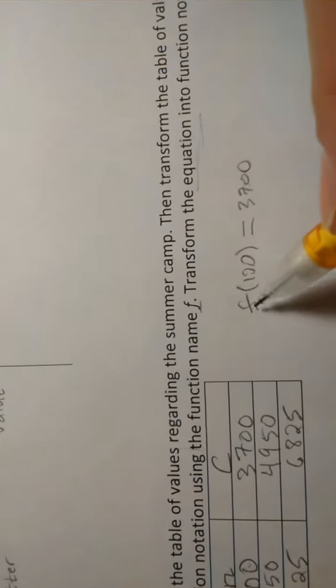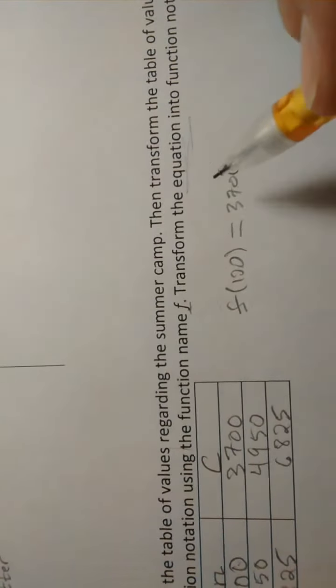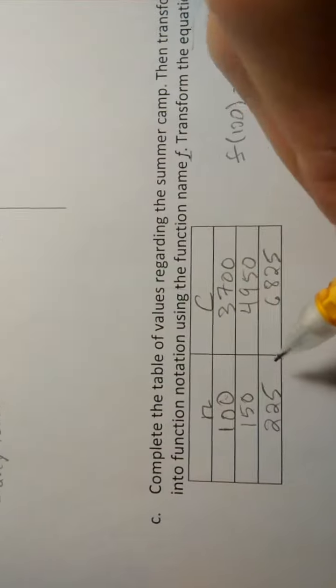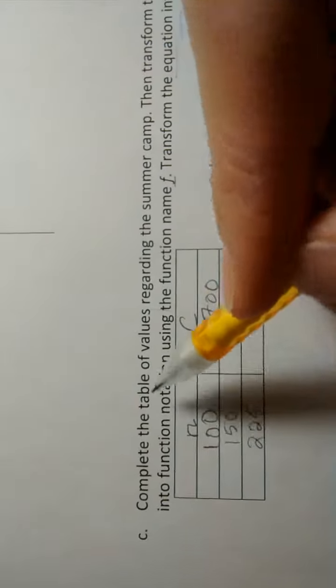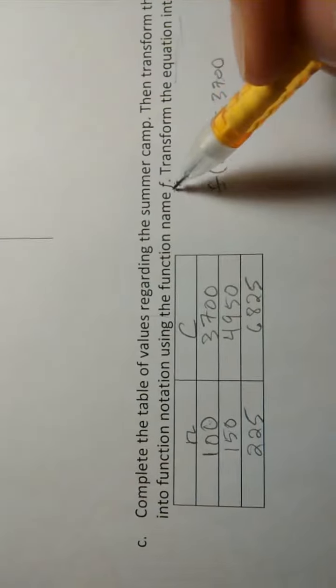It's simply saying that the function F associates 100 with 3,700. That's all it's doing. Or F is assigning 100 to 3,700. So we could talk about this table as being the function F. It assigns 100 to 3,700 and each of these to each of these. So this whole table can be represented by simply one letter here, F.